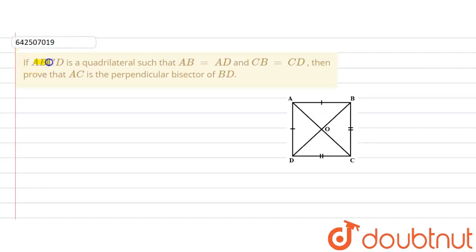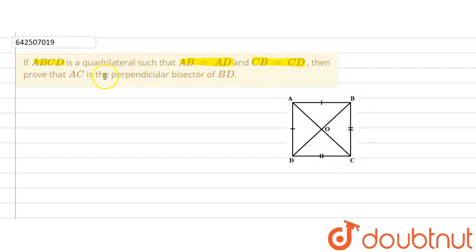The given question says that if ABCD is a quadrilateral such that AB is equal to AD, and CB is equal to CD — meaning side CD and CB are equal — then prove that AC is the perpendicular bisector of BD.